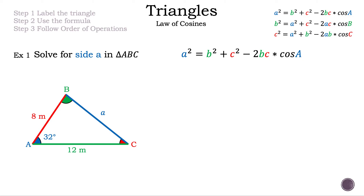Let's substitute what we know into the formula. We now have: A² = 12² + 8² − 2 × 12 × 8 × cos(32°). Let's evaluate: 12² = 144, and 8² = 64.